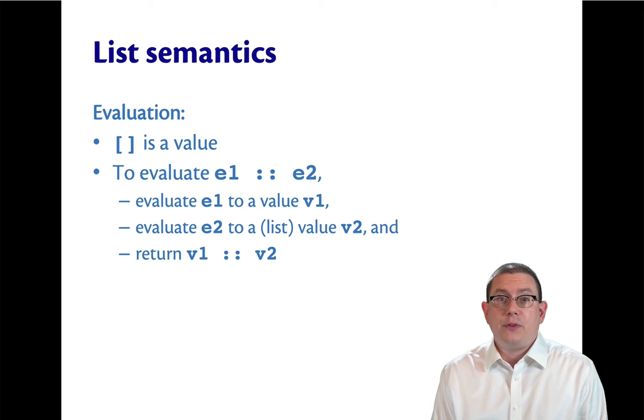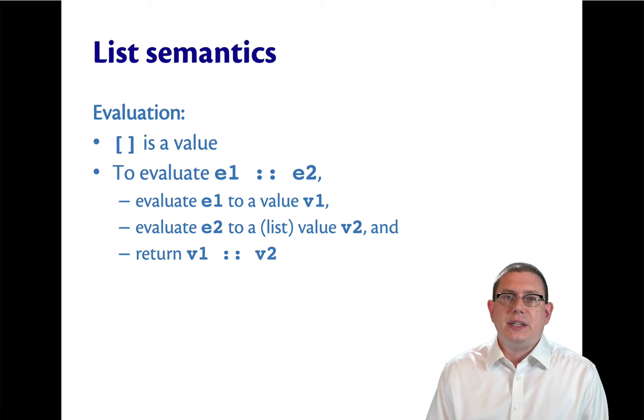Now, of course, V2 is going to have to be a list because we're adding an element onto the beginning of it. And return V1 cons V2. So a list of values is itself a value.